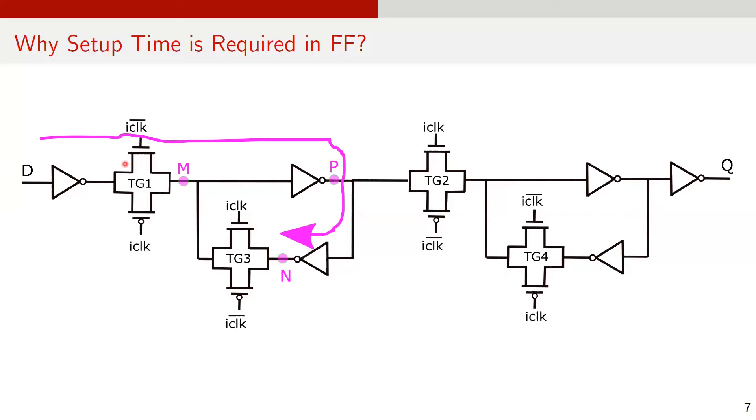If D arrives somewhat late and it reaches only after the second inverter up to point P before the clock goes high, the node N still contains the previous value and in this case, a data contention can happen inside the master latch. This can cause metastability in the flip-flop.